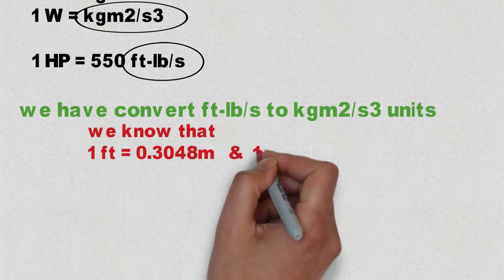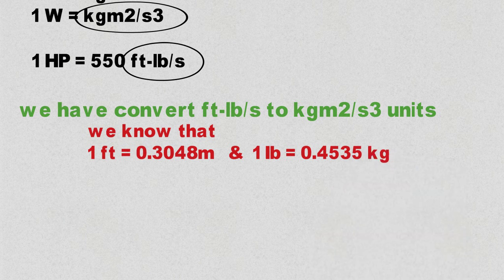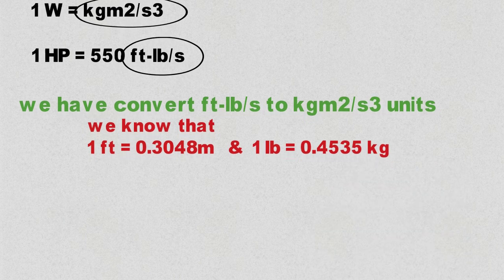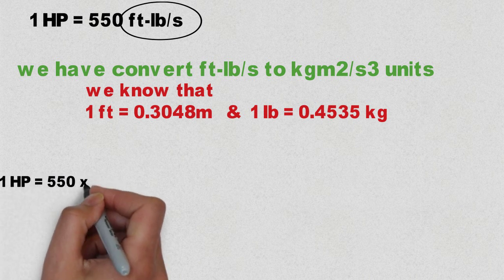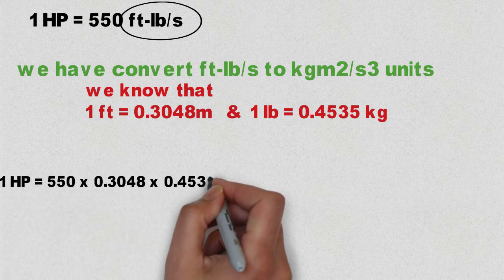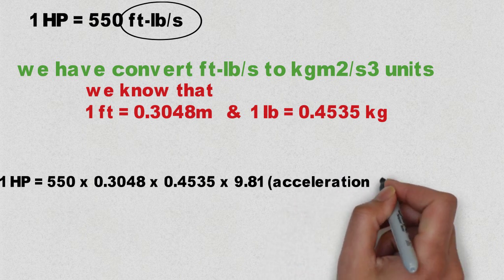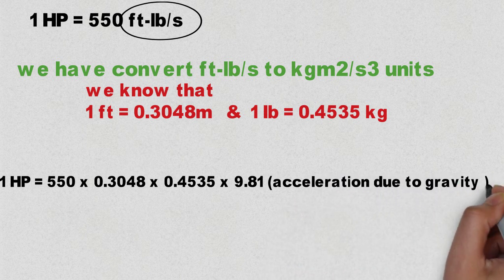So basically we have to convert one of them into a particular system of unit, that is MKS or FPS. I will go for MKS. So for MKS we convert foot to meter, pounds to kilograms, and now you will say why do we multiply acceleration due to gravity.